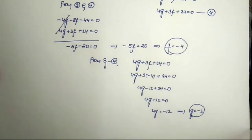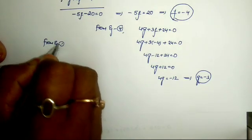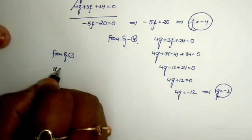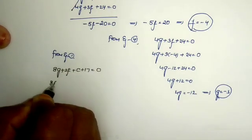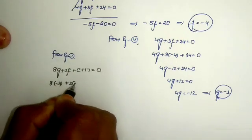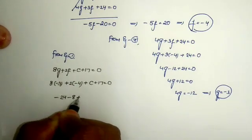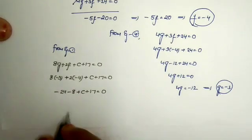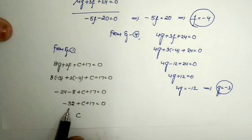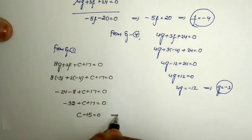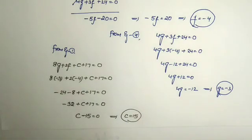Now replacing g = -3 and f = -4 into Equation 1 to find c. Equation 1 is 8g + 2f + c + 17 = 0. Substituting: 8(-3) + 2(-4) + c + 17 = 0, giving -24 - 8 + c + 17 = 0, so -32 + 17 + c = 0, meaning -15 + c = 0. Therefore c = 15. So g = -3, f = -4, c = 15.